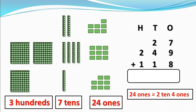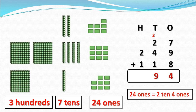Now we write 4 in the 1s column and 2 tens we will put into the 10s column above 2. Now add these 10s: 2 plus 2 equals 4, 4 plus 4 equals 8, and 8 plus 9 plus 1 equals 9 — 9 tens. Now add the 100s: 2 plus 1 equals 3 — 3 hundreds. So the answer is 394.